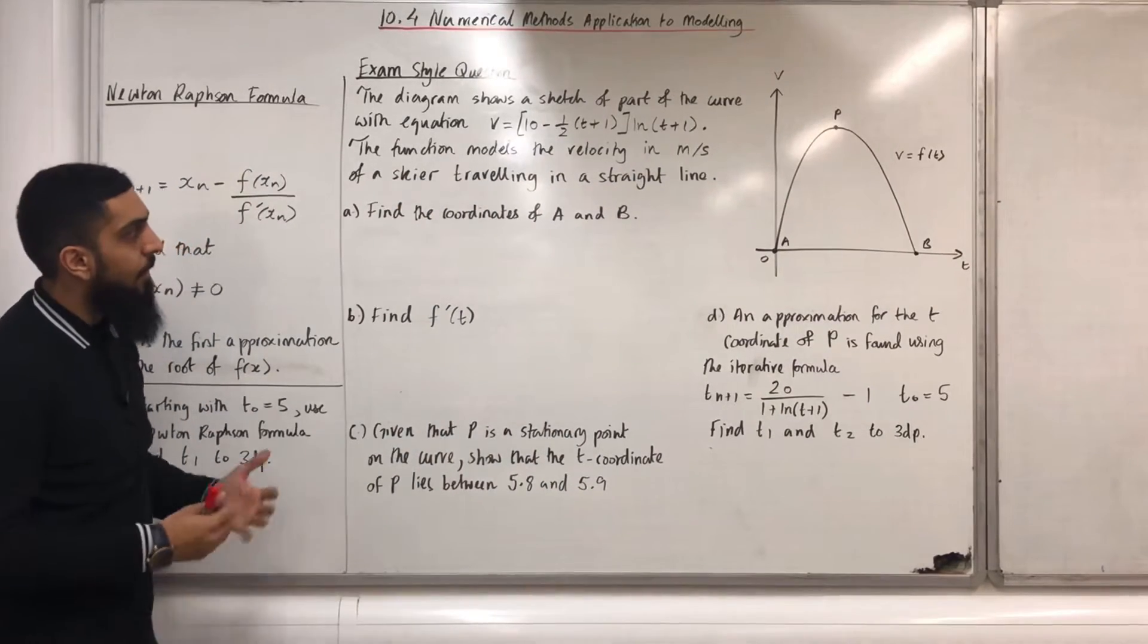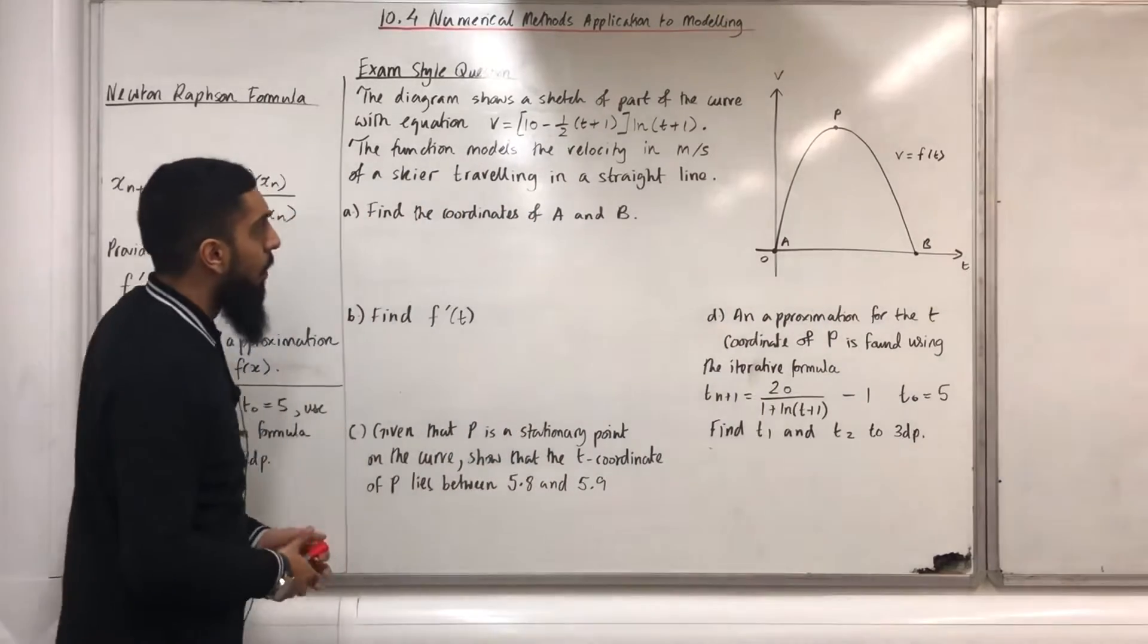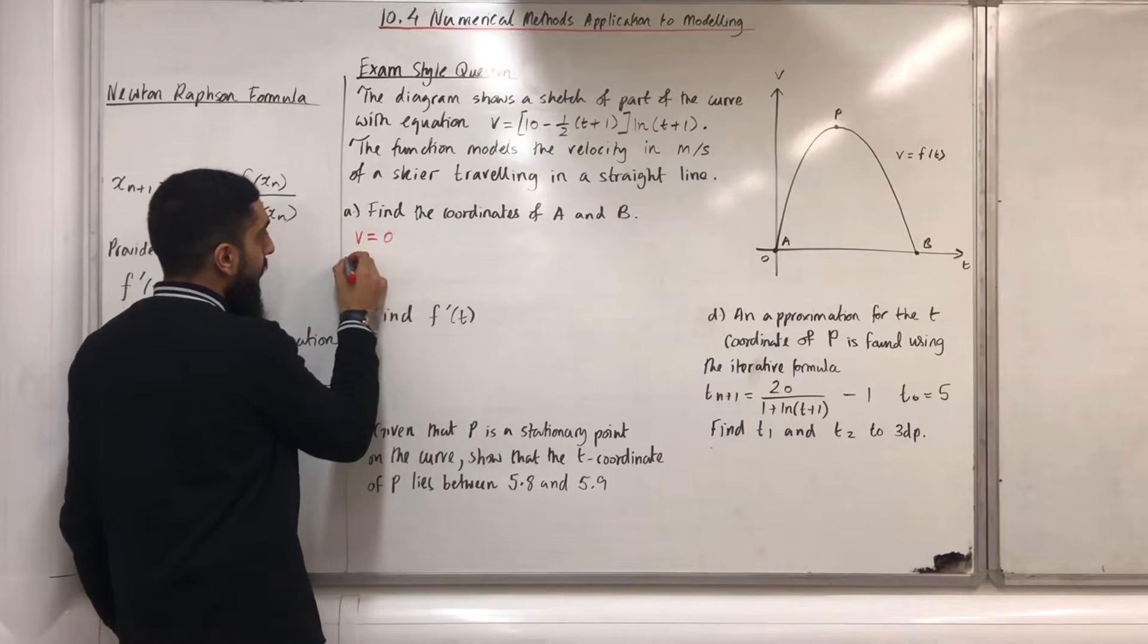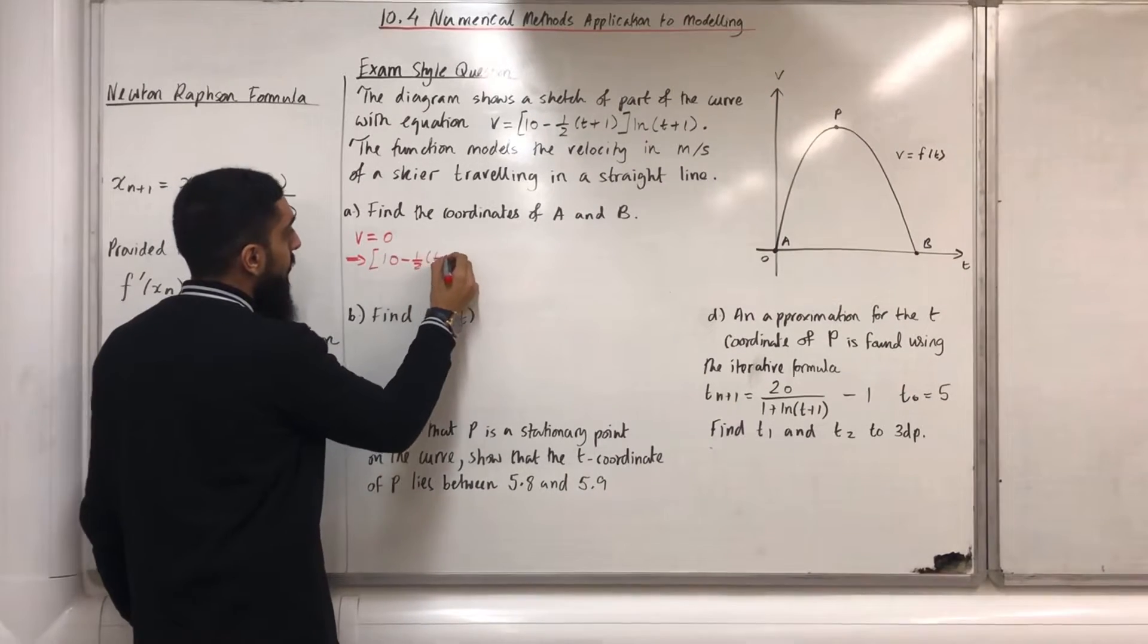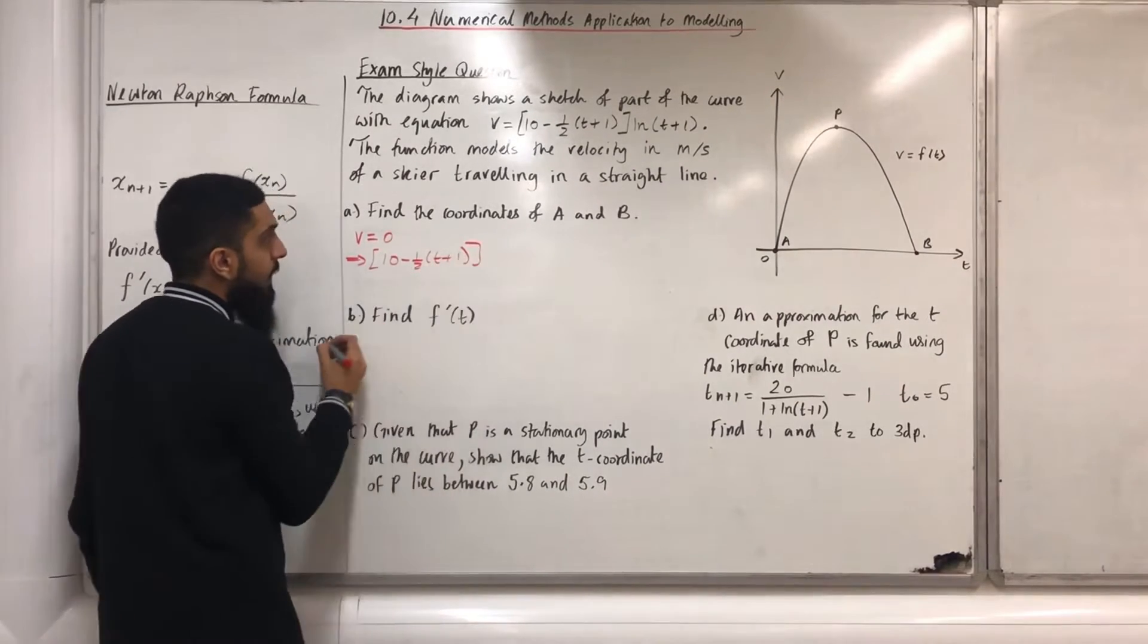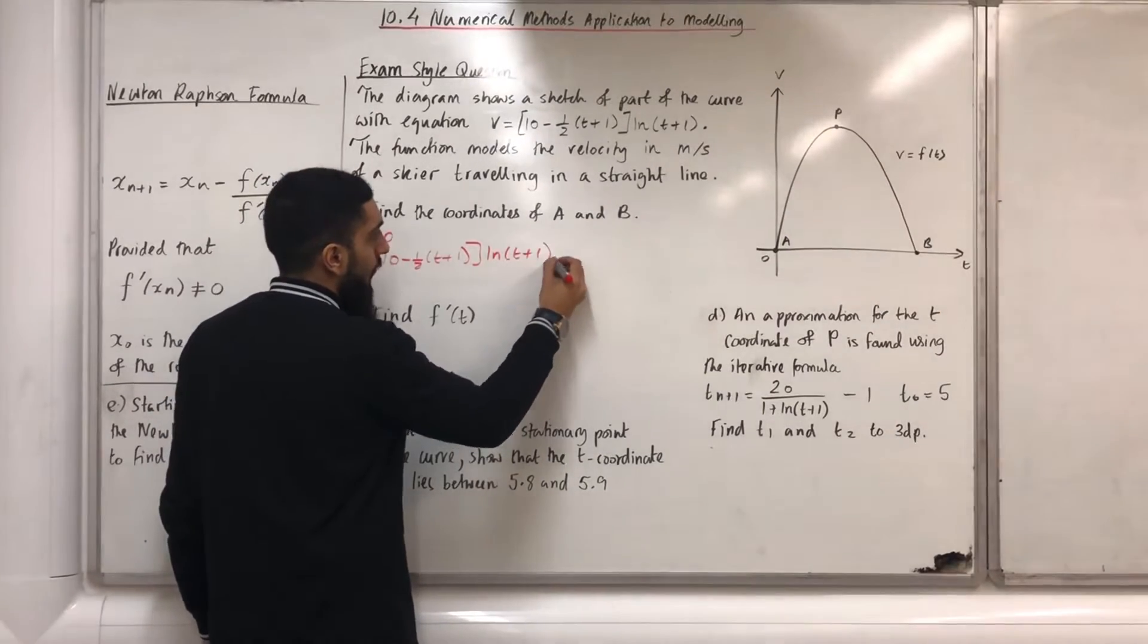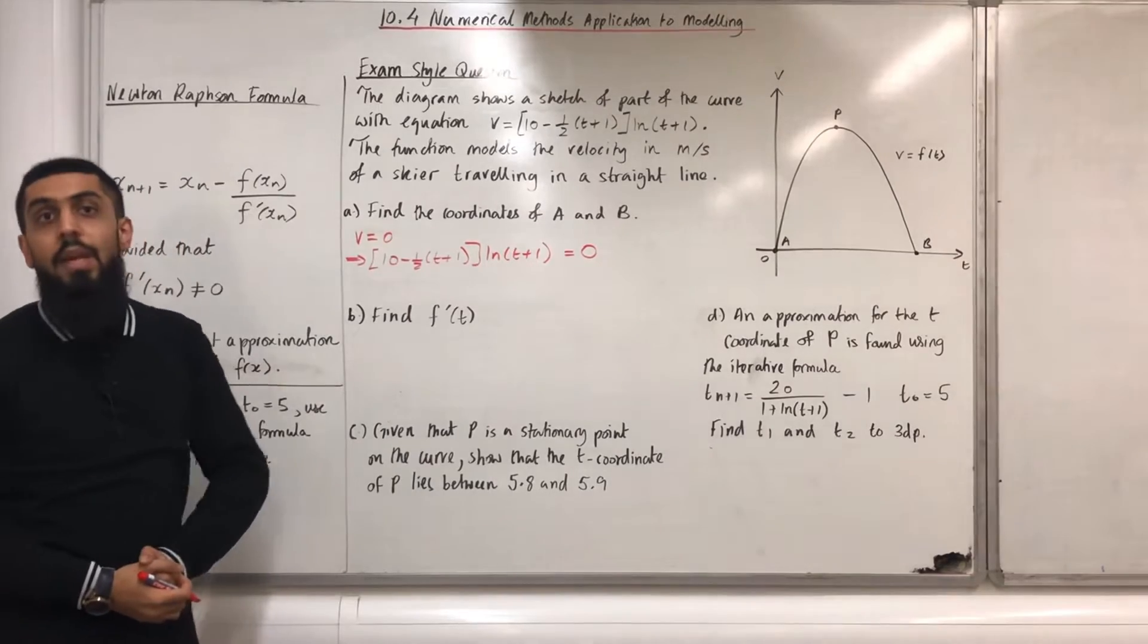Find the coordinates of A and B. A and B are t-intercepts, therefore we know that at A and at B, v = 0. This implies that [10 - 0.5(t+1)]ln(t+1) = 0. We can now generate two equations.